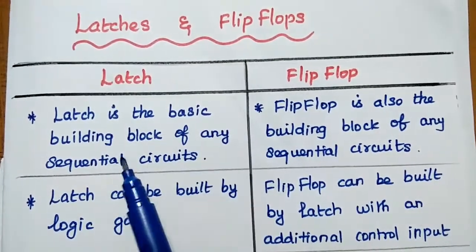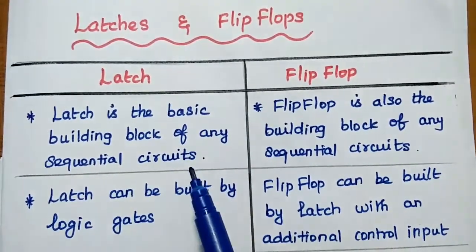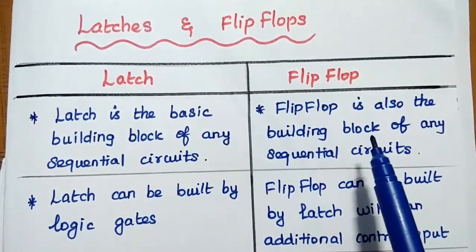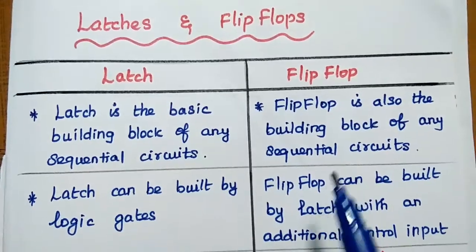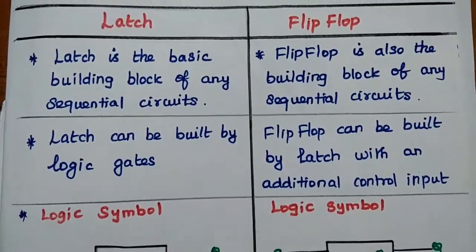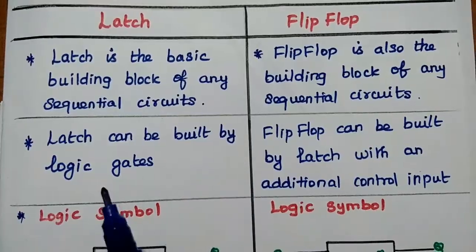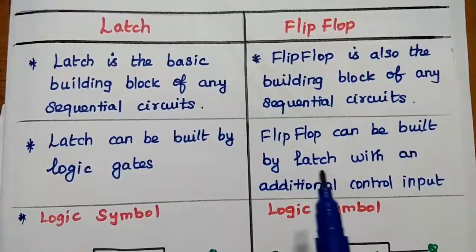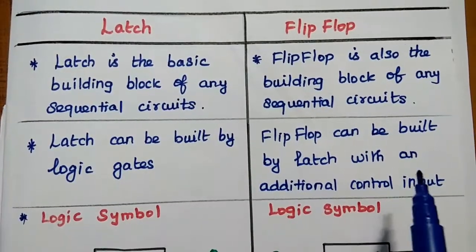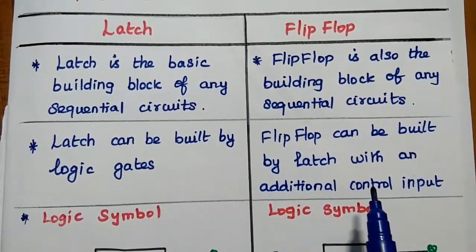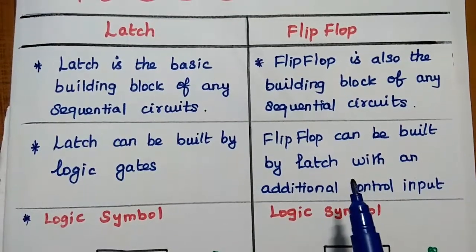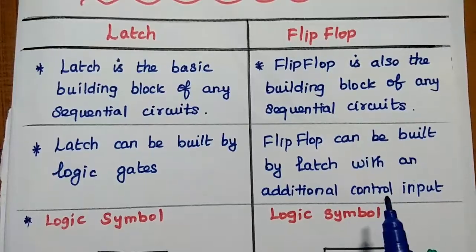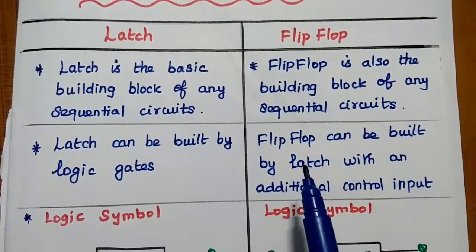Latch is the basic building block of any sequential circuits. Similarly, flip-flop is also the basic building block of sequential circuits. Latch can be built by using logic gates. Flip-flop can be built by using a latch with an additional control input. Simply, we can say a latch with an additional control signal is called a flip-flop.